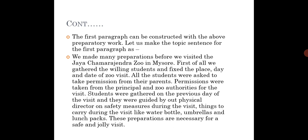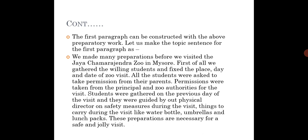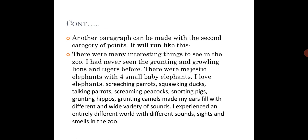See how I have done it. Topic sentence: 'We made many preparations before we visited the Jayachamarajendra Zoo in Mysore.' First of all, we gathered the willing students and fixed the place, day and date of the zoo visit. All students were asked to take permission from their parents. Permissions were taken from the principal and zoo authorities. Students were gathered on the previous day and guided by our physical director on safety measures and things to carry like water bottles, umbrellas, and lunch packs. Concluding sentence: 'These preparations are necessary for a safe and jolly visit.' This is the first paragraph — it has a topic sentence, supporting details, and a concluding sentence, following the hamburger paragraph structure.